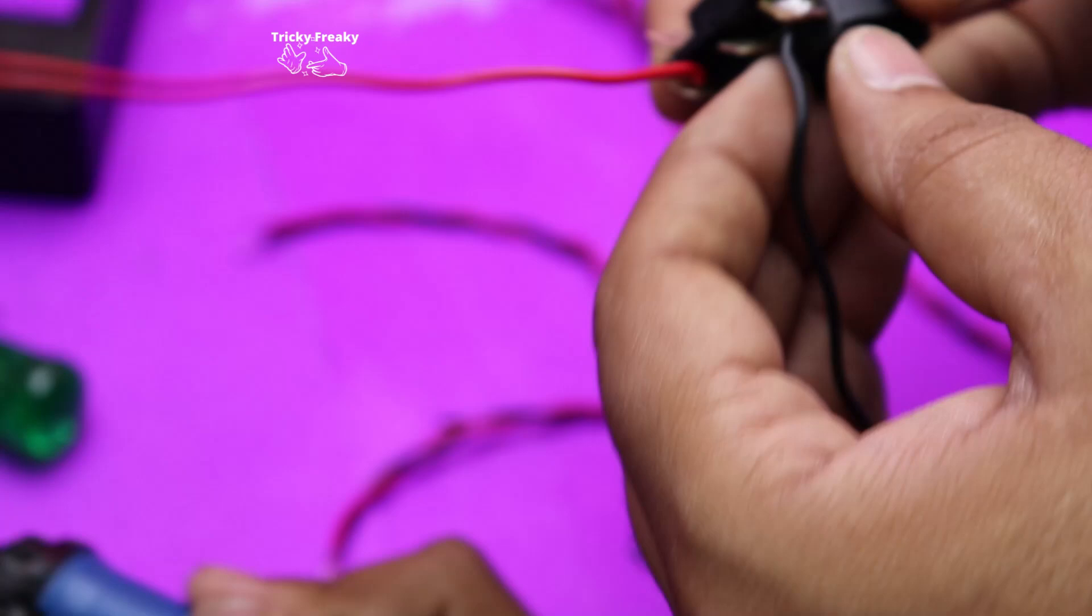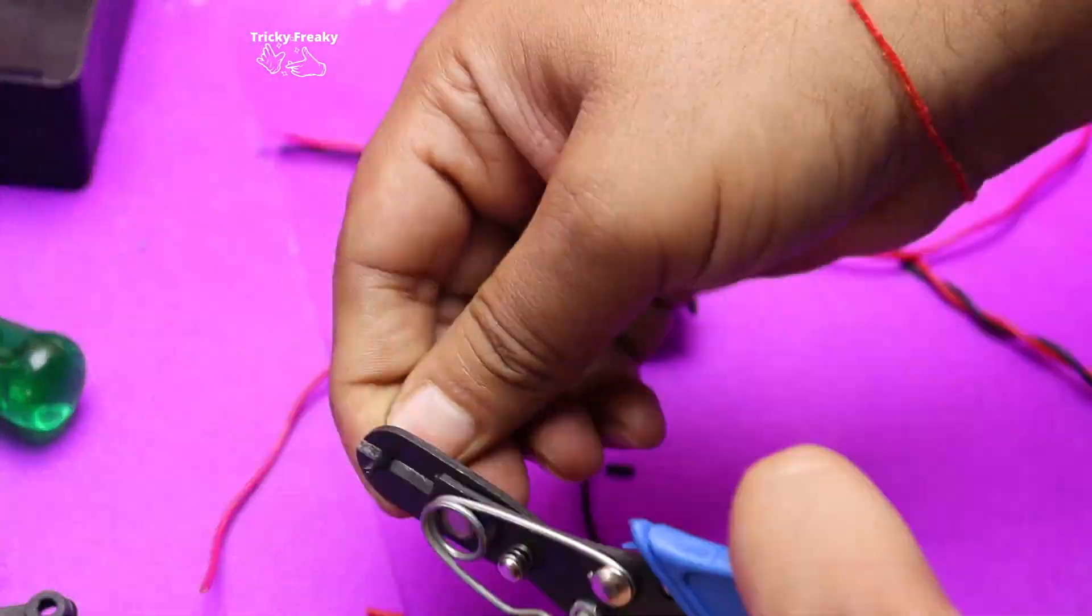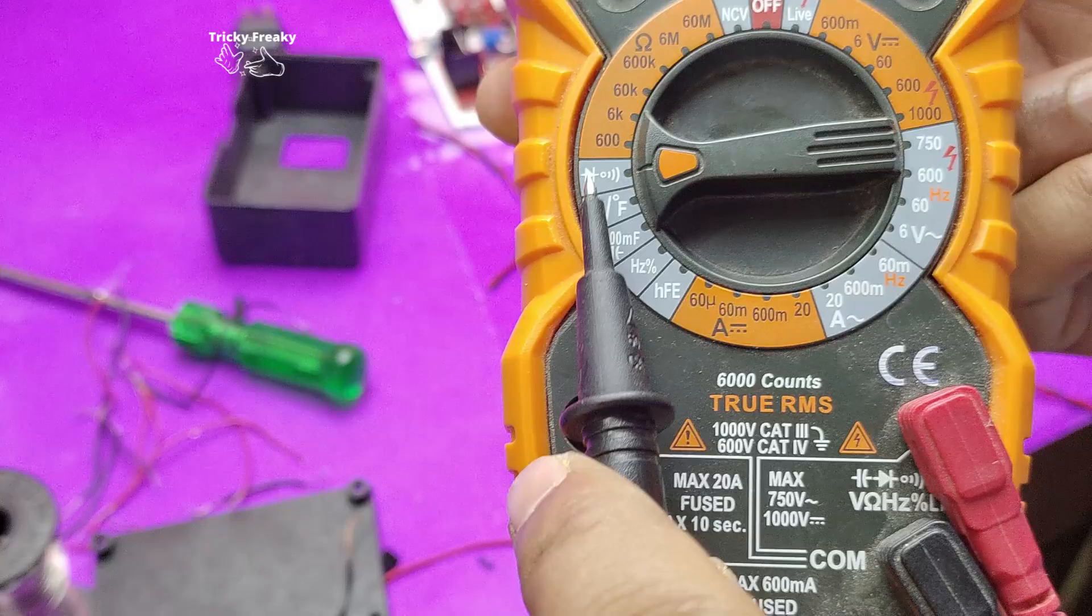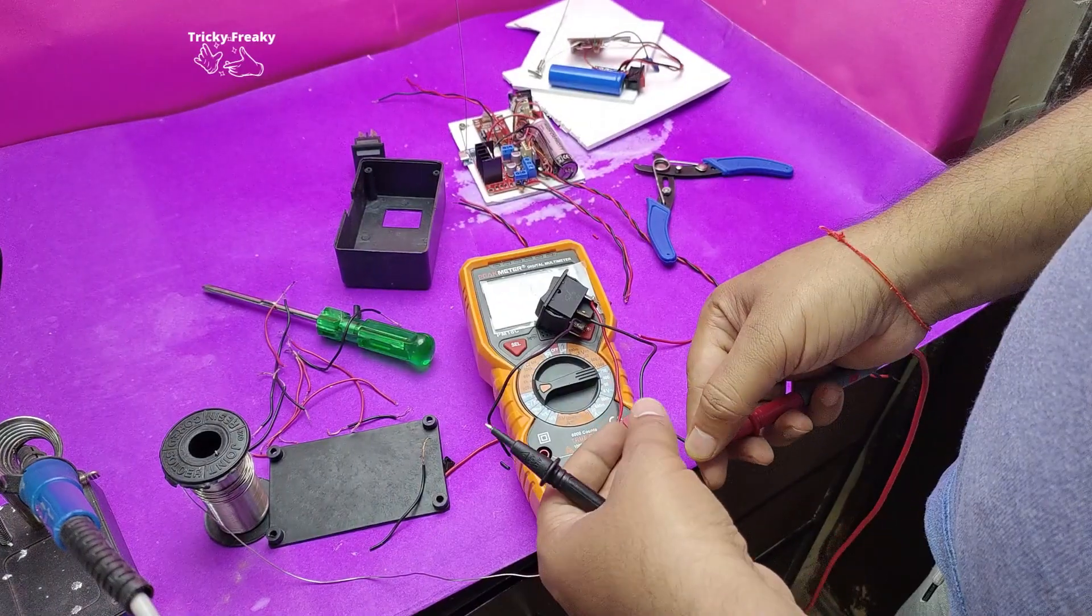In this switch, the middle pin is common, and the side pins are normally open. When we press the switch, they connect to the middle pin, which is the common point.